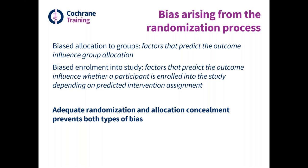Adequate randomisation and allocation concealment — by which we mean concealment of the allocation sequence before and until assignment — should prevent both biased allocation to groups and biased enrolment into the study, so it should prevent both types of bias.